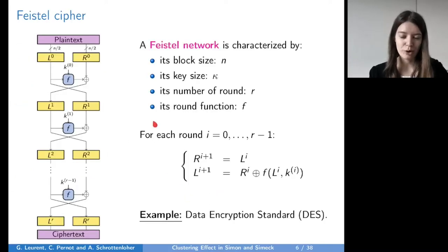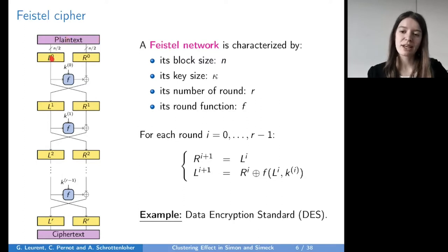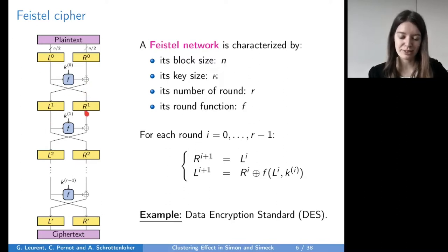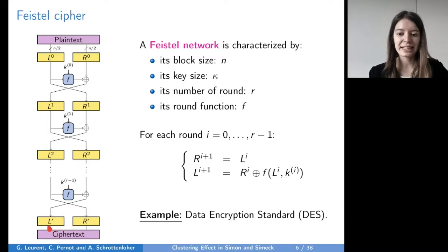Simon and CIMEC are both Feistel ciphers. A Feistel cipher works as follows: we start with a plaintext of n bits and split it into two blocks of n/2 bits, a left block and a right block. The left block goes into a round function which depends on a round key k0, and the output of this round function goes to the right part. The right part becomes the left part and the left part becomes the right part. This is done r times, the number of rounds. At the end, we obtain the ciphertext by concatenating the left part and the right part. A Feistel network is characterized by a block size n, a key size κ, a number of rounds r, and a round function f. The famous example is the Data Encryption Standard.